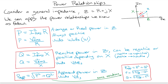The apparent power is the hypotenuse — it's the square root of the real power squared plus the reactive power squared. With some simple algebra, we have other relationships: we can solve for real power if we know the apparent power and the reactive power, and conversely, we can solve for reactive power if we know the apparent power and the real power.